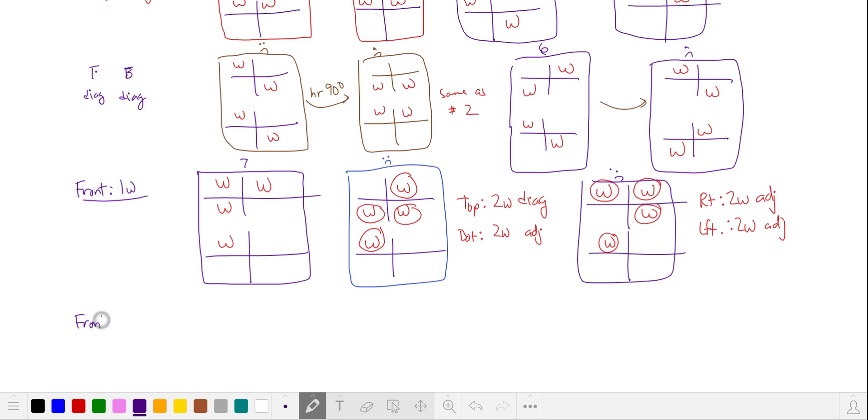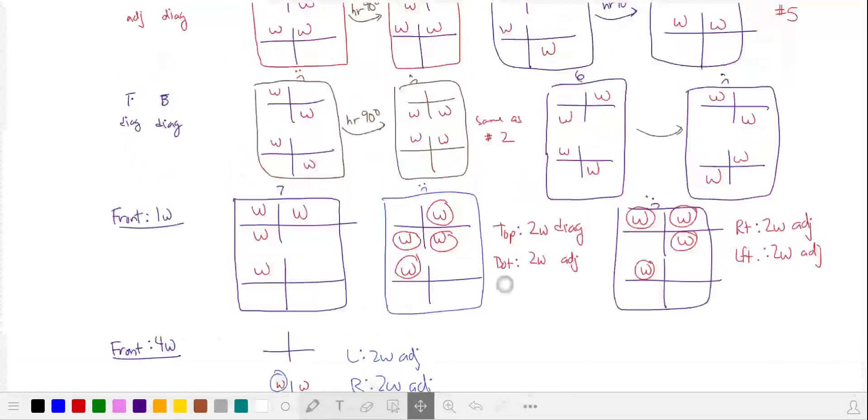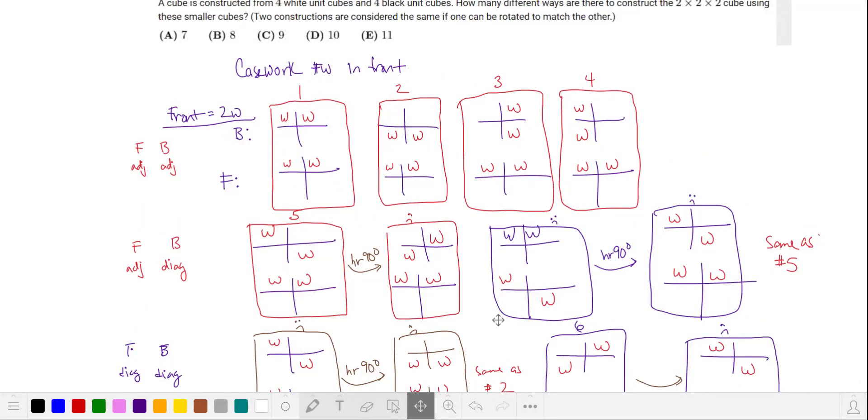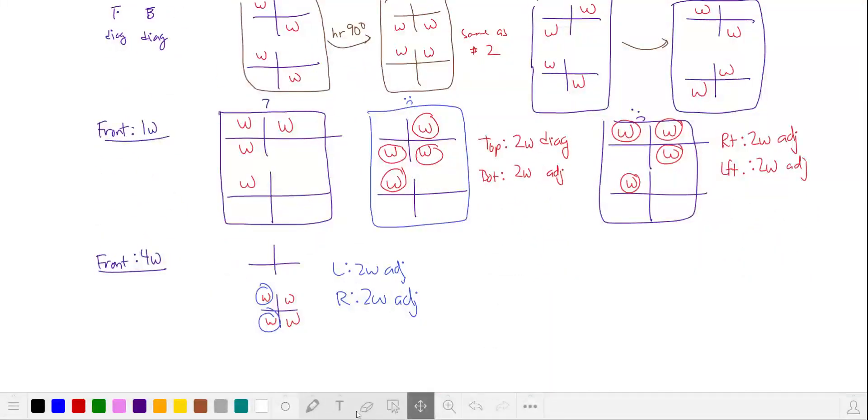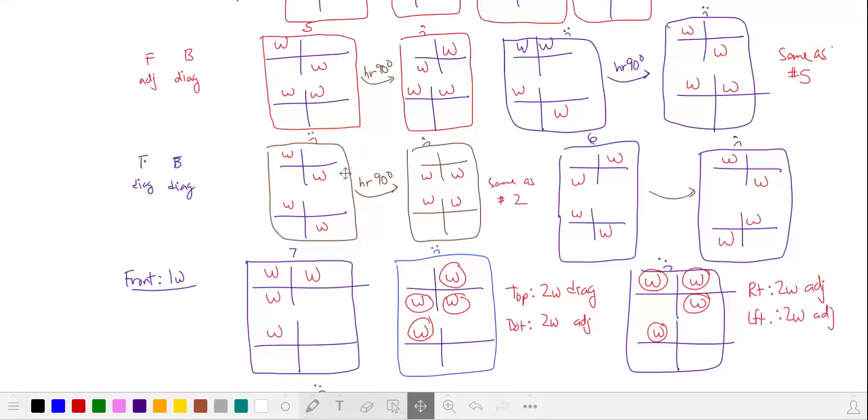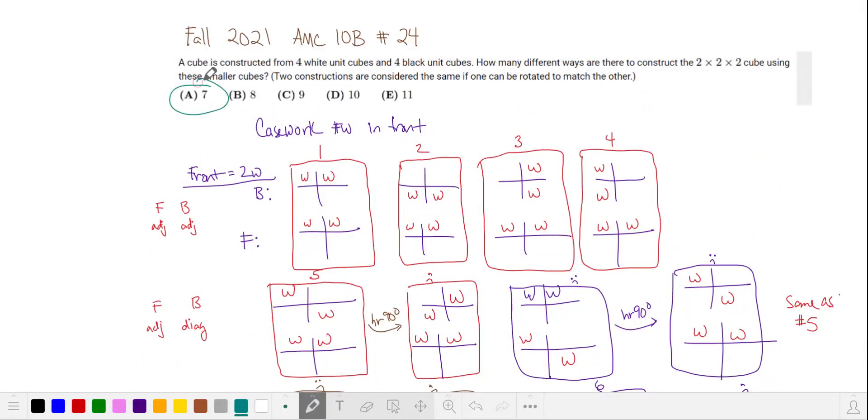The last case is we can have a front with four whites like this. Notice that we can also look at this as having two whites adjacent on the left side, two whites adjacent. And on the right hand side, two whites adjacent. And we have all those covered here. It looks closest to what we might have with orientation or construction number one. So this is basically same as number one. Circle it, unhappy face. So it looks like the number of unique constructions with rotations is seven. And that's our answer.